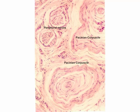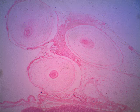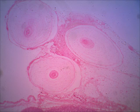Let's look at some other slides of pacinian corpuscles. Here you can see two, and the way to recognize these — it just looks like circles with other circles with other circles around them. A lot of times we describe these like a sliced onion. They're really easy to recognize. On this last slide in this section, here you can see three pacinian corpuscles, and they really do look like sliced onions. I believe this one is located just outside the wall of the pancreas.